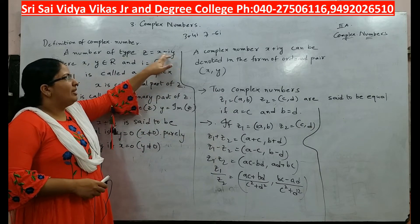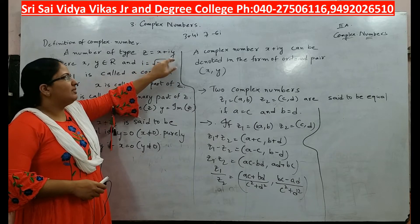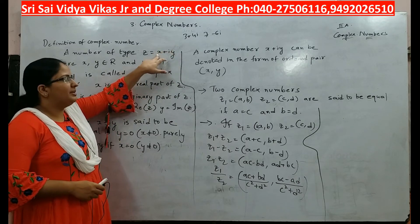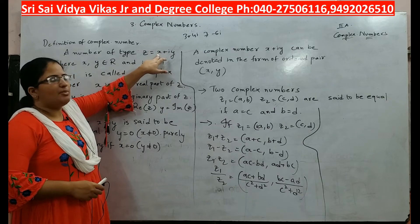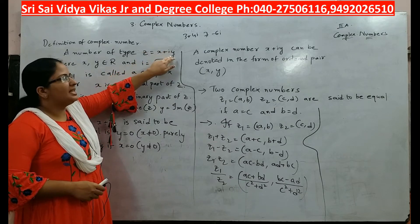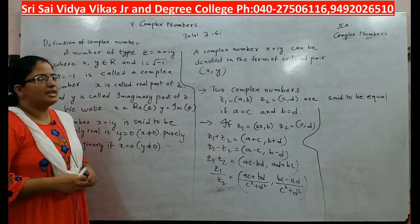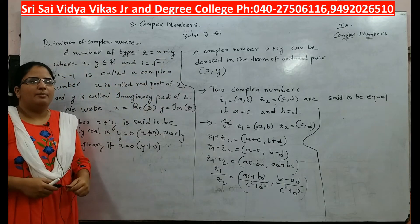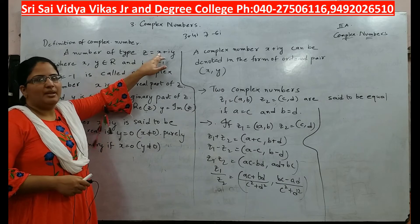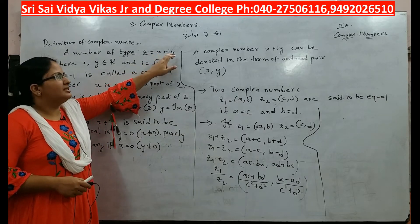...if y is equal to 0 and x is not equal to 0. If y equals 0, the imaginary part is eliminated and only the real part remains. If x is equal to 0, the real part is eliminated and only the imaginary part remains. So a complex number is said to be purely imaginary if x is 0, and purely real if y is 0.